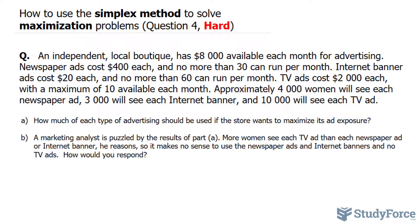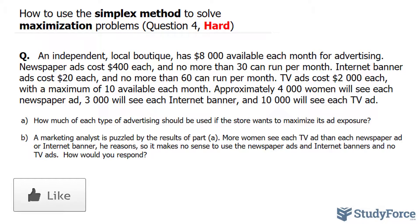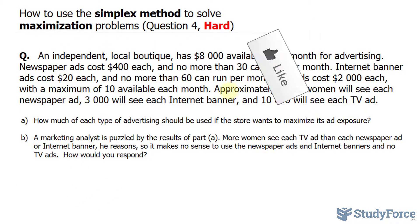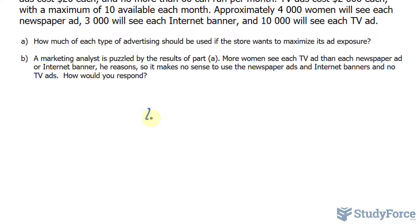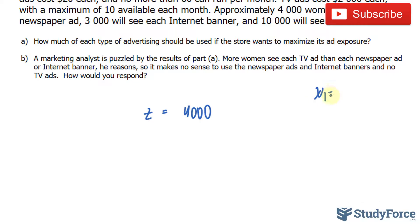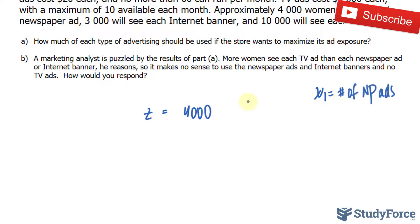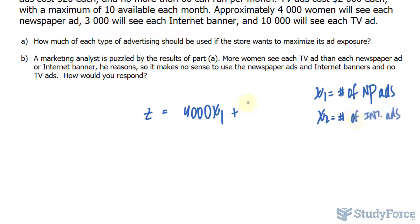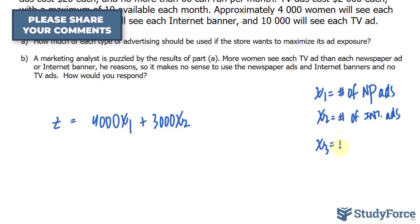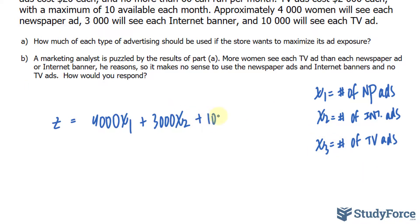The first thing we want to do is create the objective function — the function we will use to maximize the ad exposure. Z equals 4,000 X sub 1, where X sub 1 is the number of newspaper ads, plus 3,000 X sub 2, where X sub 2 is the number of internet ads, plus 10,000 X sub 3, where X sub 3 is the number of TV ads. That is our objective function.